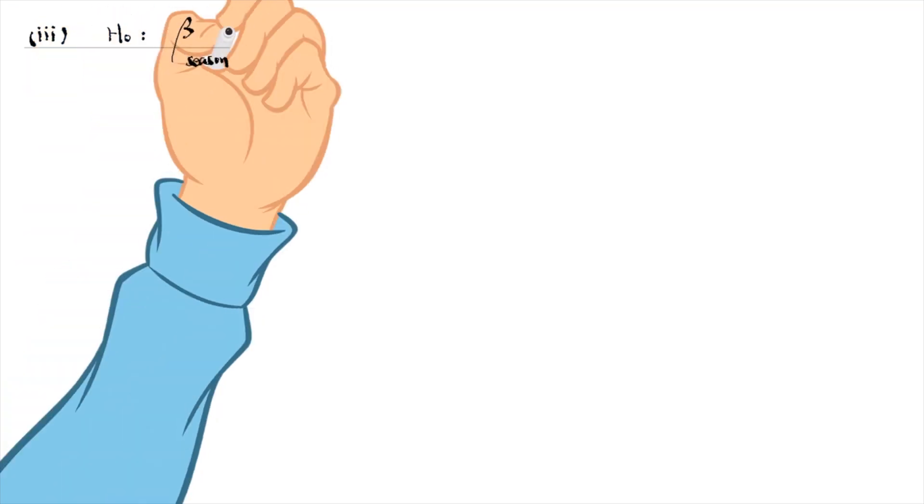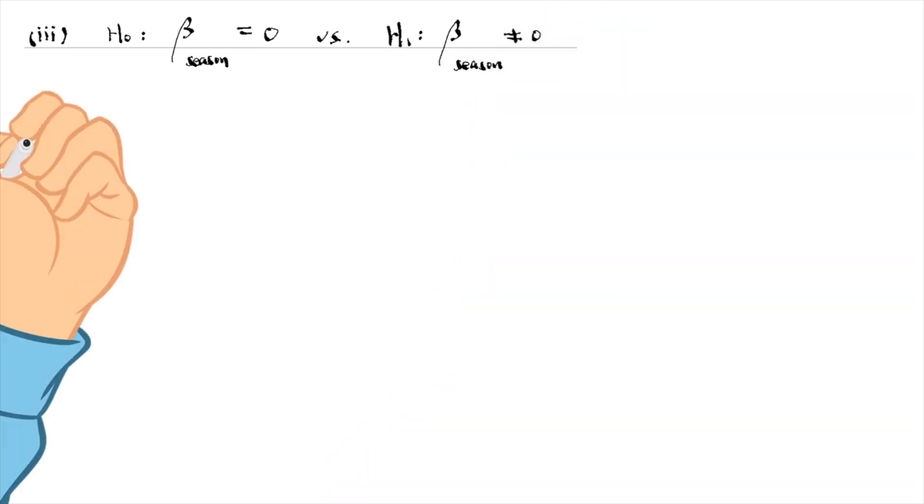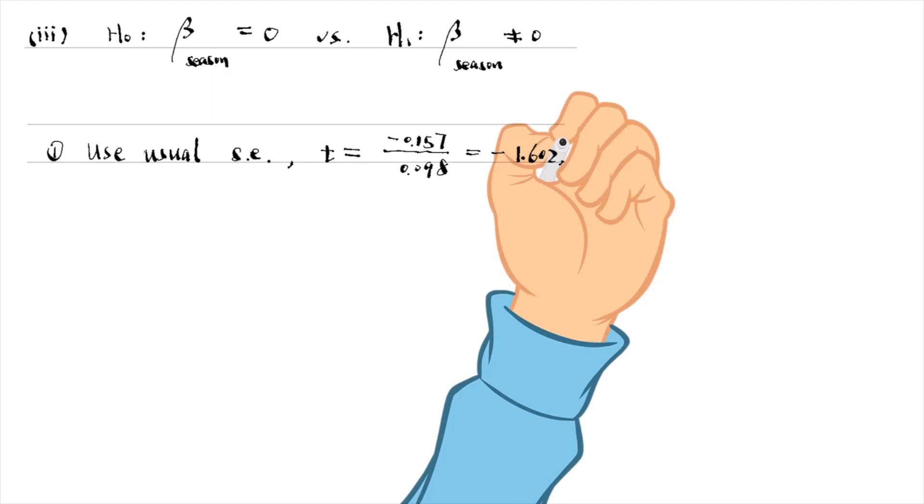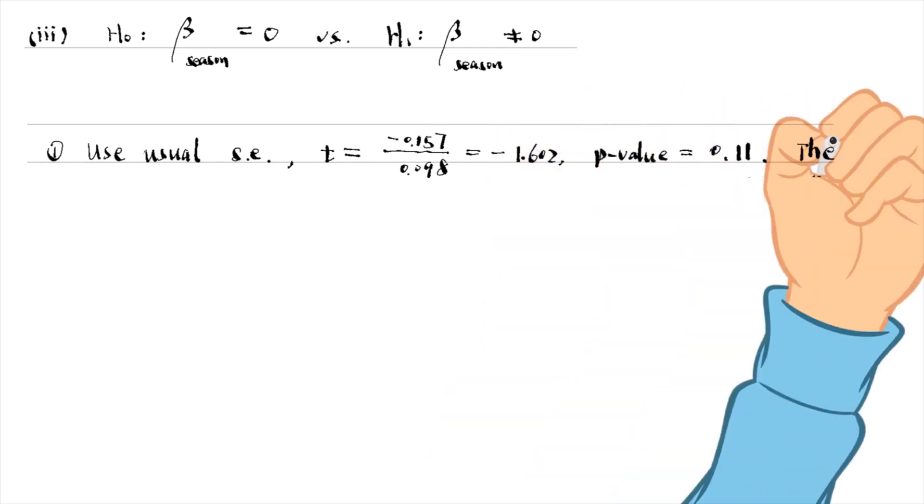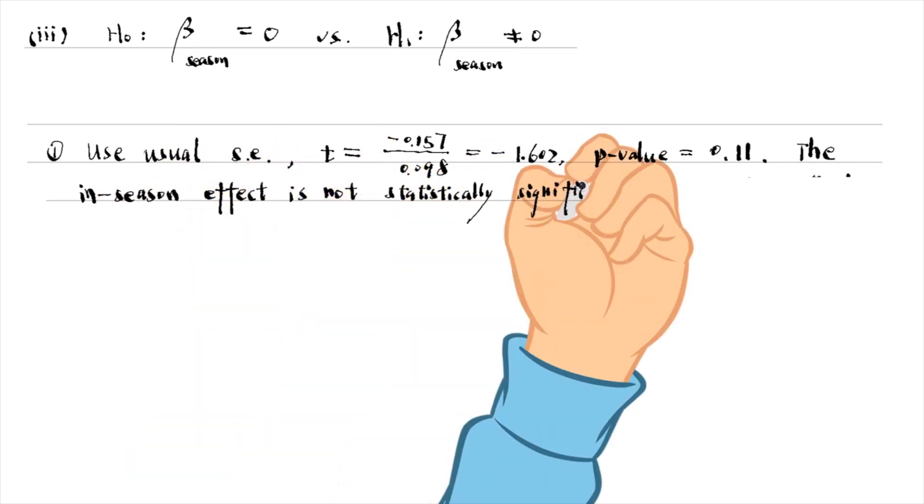For the last part, the t-statistic using the usual standard error is minus 1.6, and its p-value against a two-sided alternative is 0.11. The in-season effect is not statistically significant at even the 10% level.